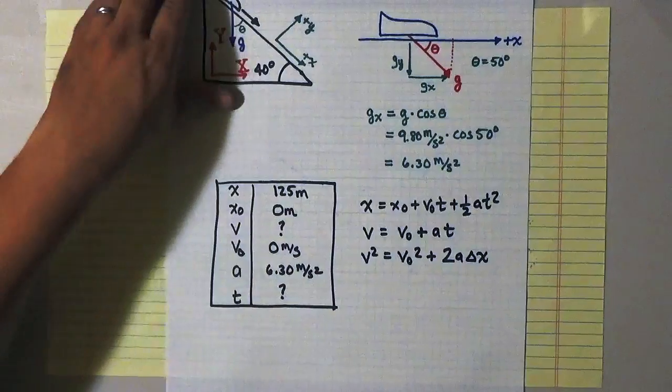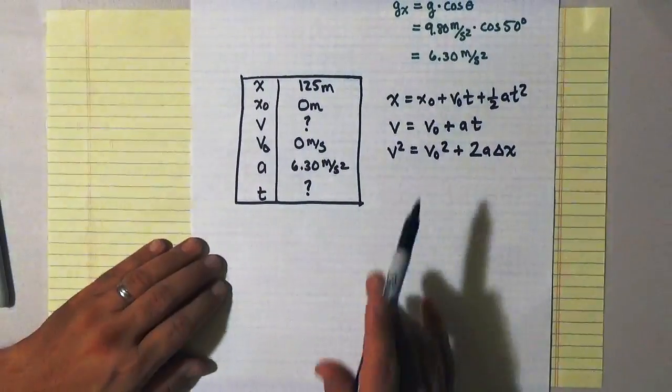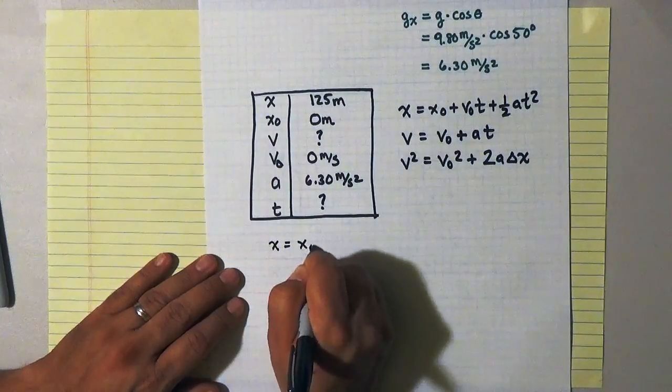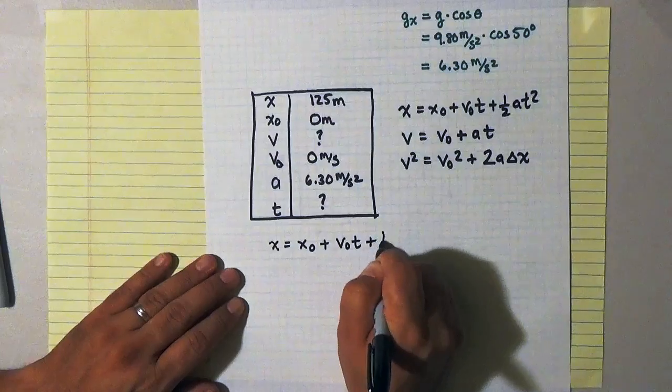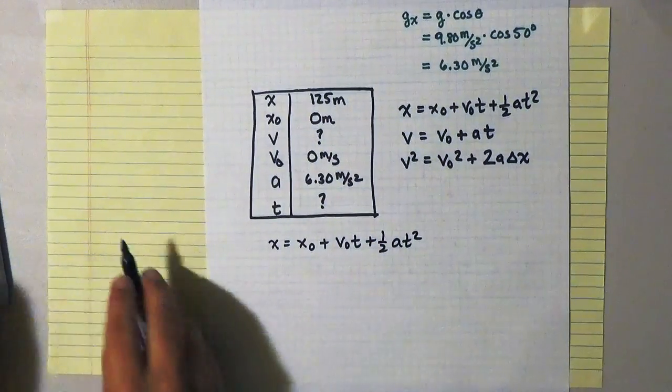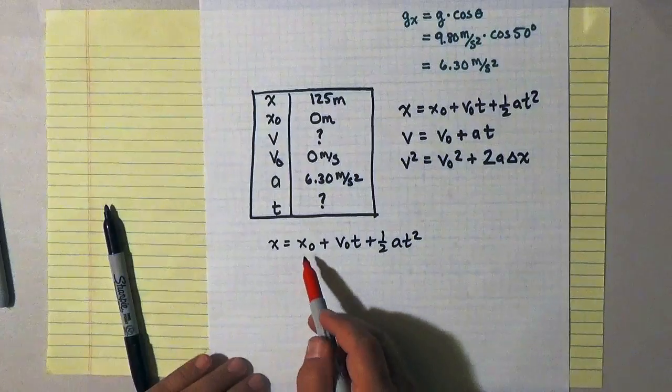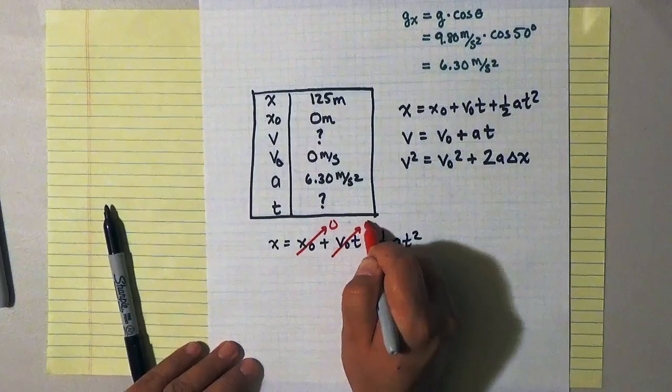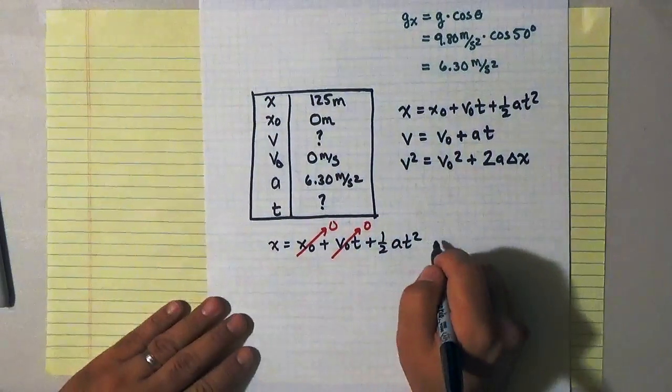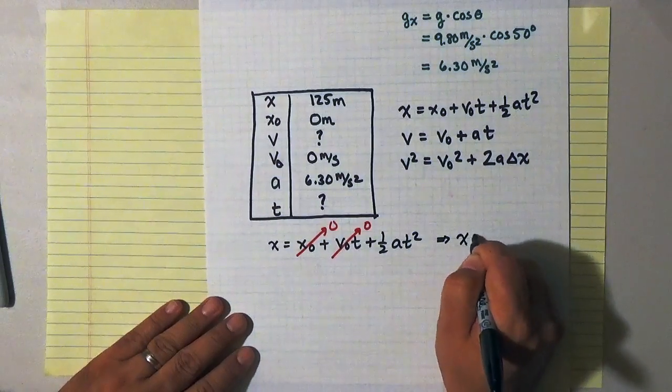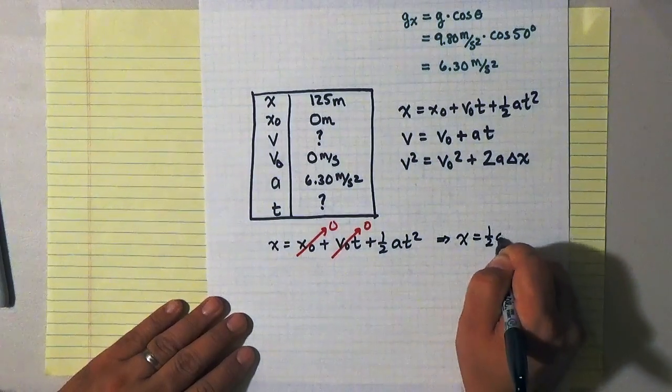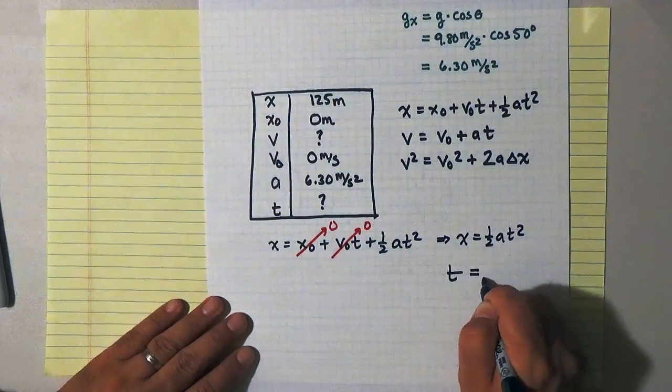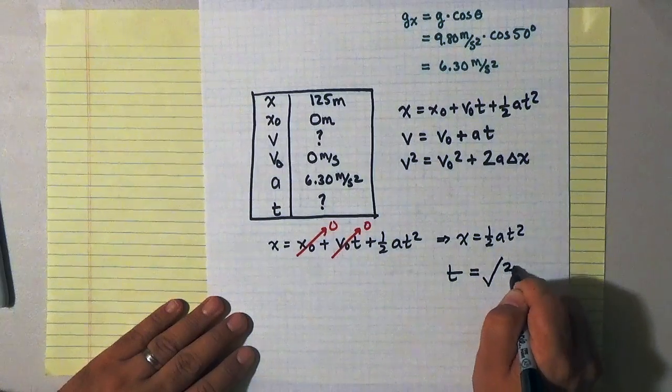So let's go ahead and do it that way. So if I were to take that equation and write it out, x is equal to x_0 plus v_0 t plus a half at squared. If I look at my kinematic table, my initial position is 0 and my initial speed is 0. And so algebraically, this equation becomes very simple, namely that x is equal to a half at squared.